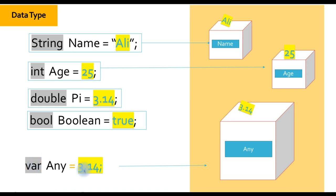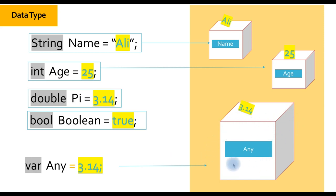There is another variable type which is 'var'. Var is actually a dynamic data type — you can put 3.14, you can put 'Ali', you can put 25. If you need it, you can use this data type by writing var, giving the variable a name, and assigning it equal to anything you want. It will be created and you can store anything inside.